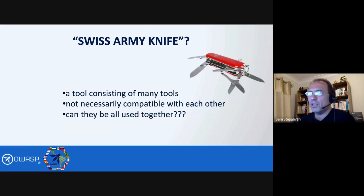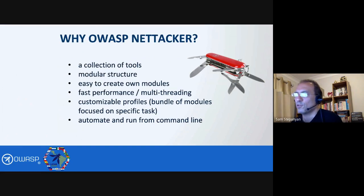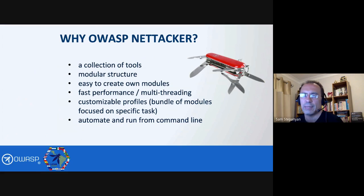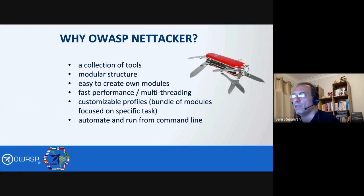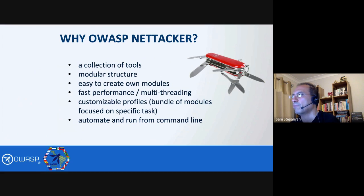You can think of OWASP Nettacker as a Swiss Army knife. Just like a Swiss Army knife, Nettacker is a tool which consists of many tools that can all be used together — it has a modular structure, and each module is like a blade you can pull out. If you know how to program in Python, you can write your own module; there is a guideline section in the documentation for this. It's a relatively fast-performing tool because it uses Python multi-threading. It has customizable profiles — bundles of modules focused on specific tasks — so you can run several modules together. And of course it's automatable, so you can run it from the command line.